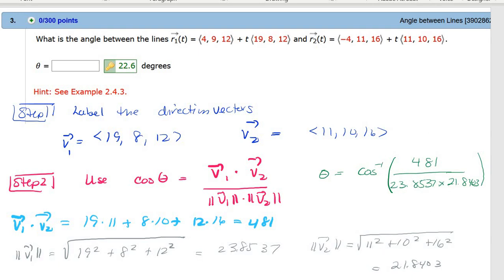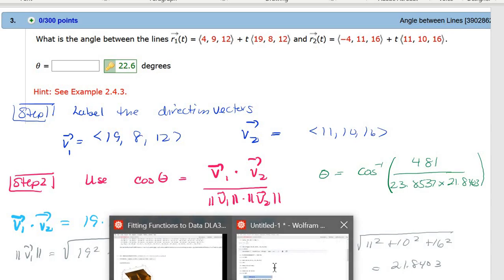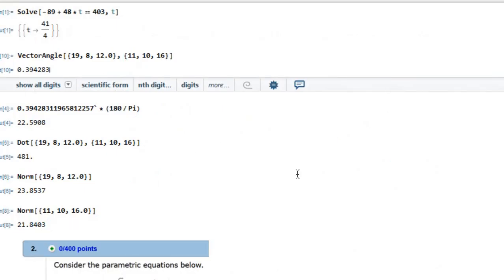Boy, it's a lot easier to do vector angle, isn't it? But just to show you, Mathematica can do these numbers as well. So it will do dot products between two vectors and norms if you want to do pieces of this.